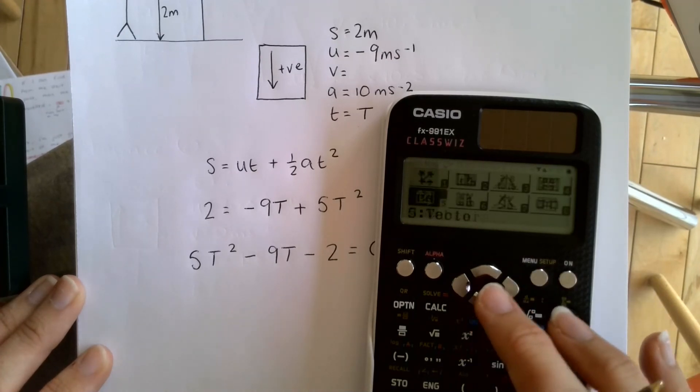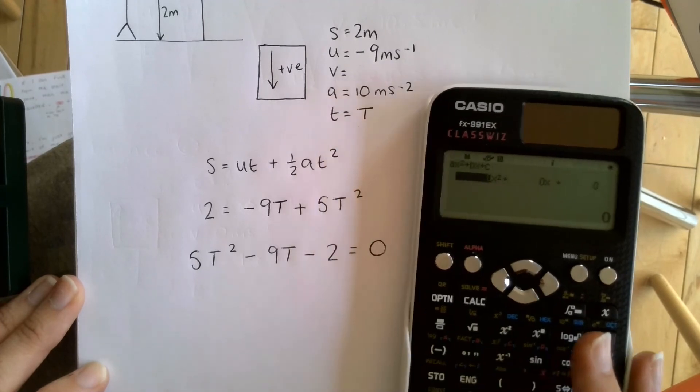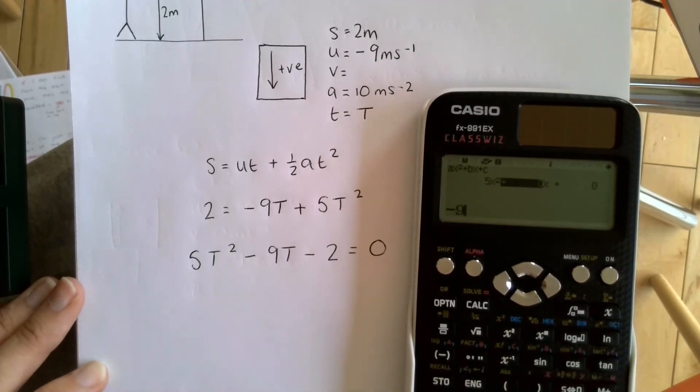Go to equation, it's polynomial of degree two. And I've got five T squared minus nine minus two on the end.